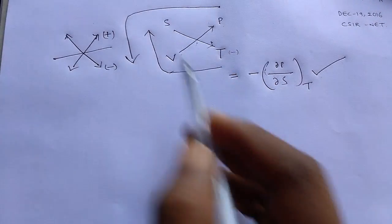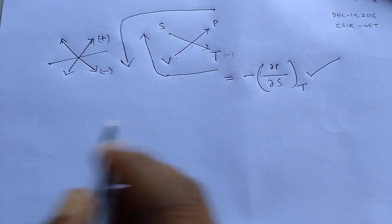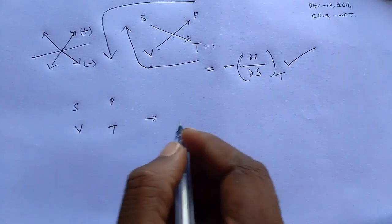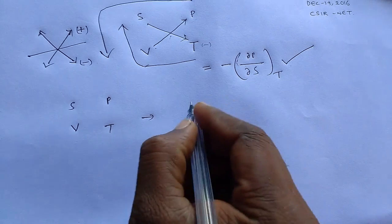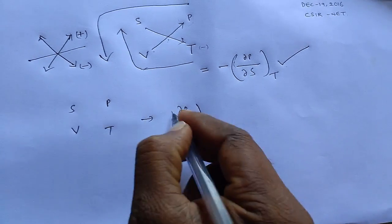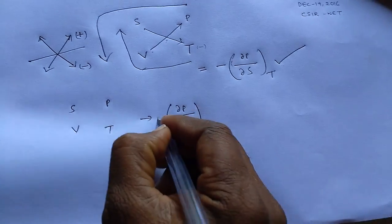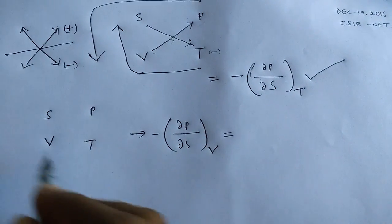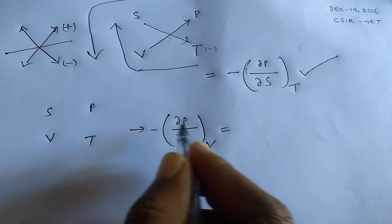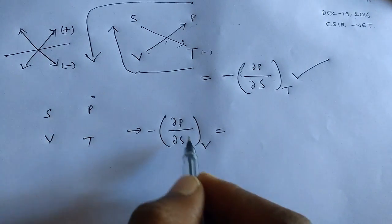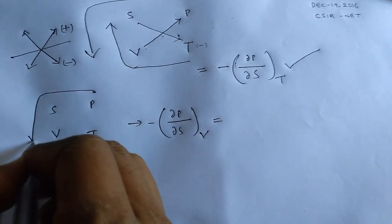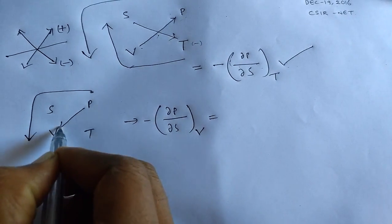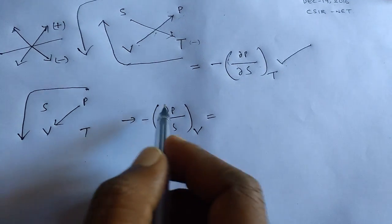So by using this TPSV, we can give any Maxwell relations. For example, TPSV, if the relation is given as like this, dou P by dou S V is equal to what? Just by using this, we should give a pattern to this TPSV. Dou P, we are starting here, and dou P by dou S, it goes like this, and then our constant V, that means P to V, right? This is the pattern is given.